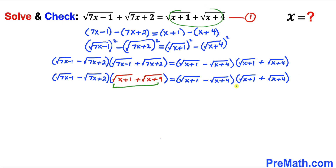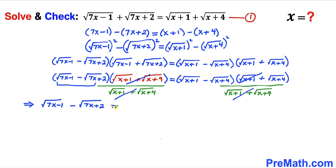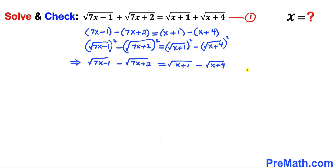We can see that the factor (√(x plus 1) plus √(x plus 4)) is common on both sides. Dividing both sides by that factor, it cancels out, and we are left with: √(7x minus 1) minus √(7x plus 2) equals √(x plus 1) minus √(x plus 4). Let's call this equation number 2.